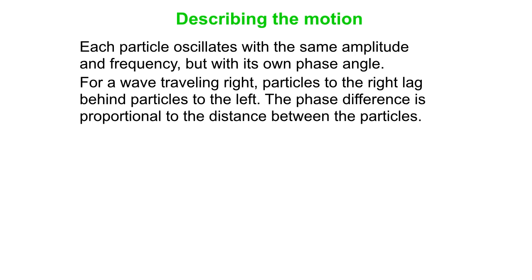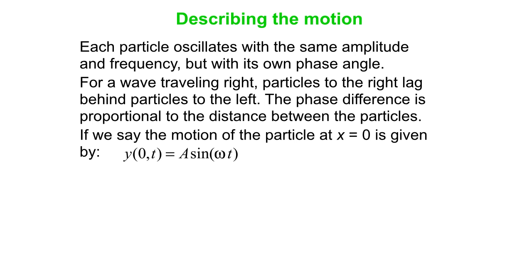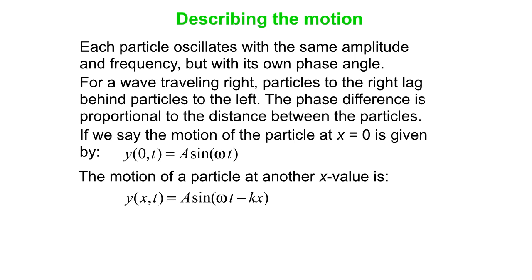Note that for a wave that travels right, particles to the right lag behind particles to the left in time. And so the phase difference is proportional to the distance between the particles. The motion of the particle at x equals zero is given by A sin(ωt) with no phase. Then one at a position x is given by A sin(ωt - kx),